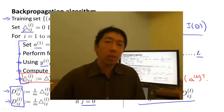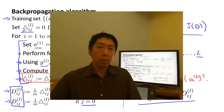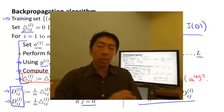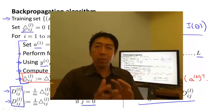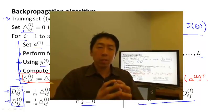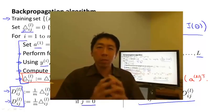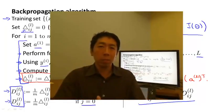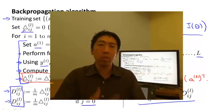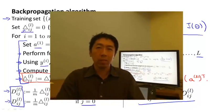So that's the backpropagation algorithm and how you compute derivatives of your cost function for a neural network. This was a lot of details and steps strung together, but in the programming assignments and later in this video, we'll give you a summary so that you have all the pieces together and know exactly what you need to implement to compute the derivatives of your neural network's cost function with respect to its parameters.